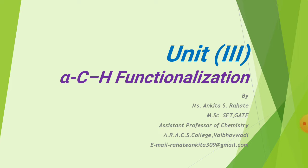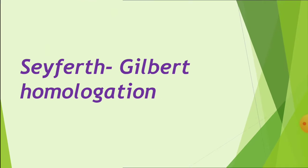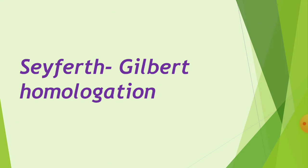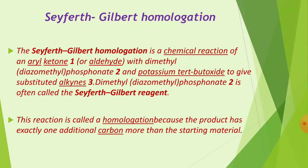MSc Part 2, Paper 2, Synthetic Organic Chemistry Unit 3 covers enamine ylides and alpha C-H functionalization. The last topic is alpha C-H functionalization, and the name reaction is the Seyferth-Gilbert Homologation. The Seyferth-Gilbert Homologation is a chemical reaction of an aryl ketone or aldehyde with dimethyl diazomethyl phosphonate and potassium tert-butoxide to give the substrate.